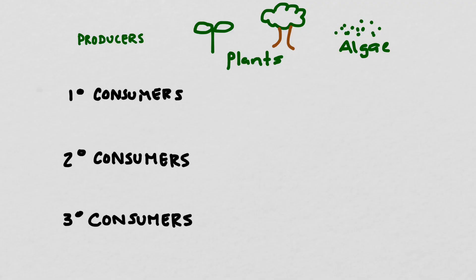Depending on whether you're looking at a land or a marine environment, these are going to include plants and or algae. The thing they have in common is that they're all photosynthetic organisms that get their energy from the sun.